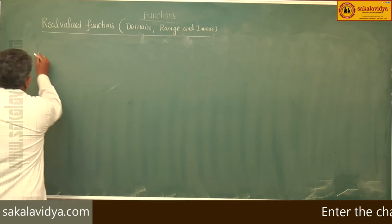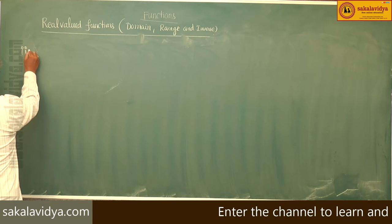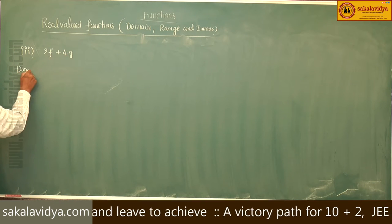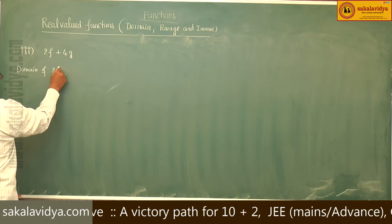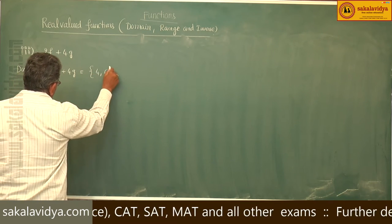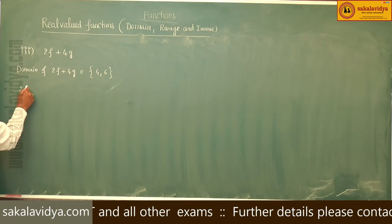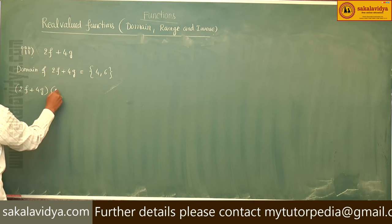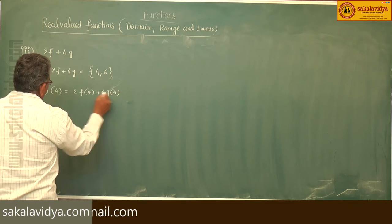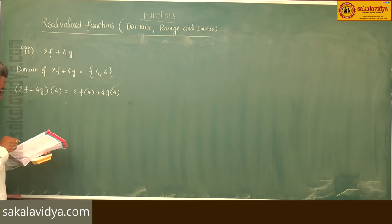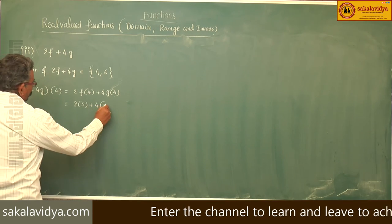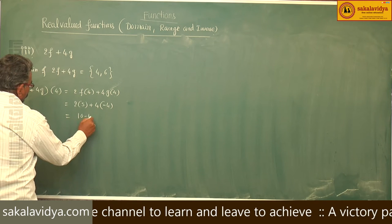Third problem: 2f plus 4g. Domain of 2f plus 4g is equal to {4, 6}. Now, 2f plus 4g of 4 — this is 2f of 4 plus 4g of 4. Now, f of 4 is equal to 5, so 2 into 5 plus 4 into g of 4. g of 4 is minus 4. So, 10 minus 16, that is minus 6.